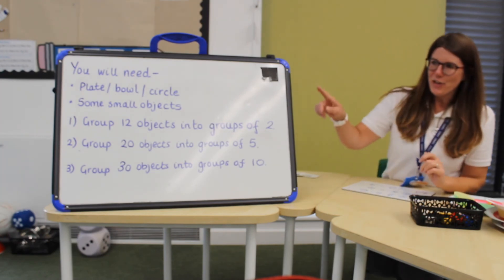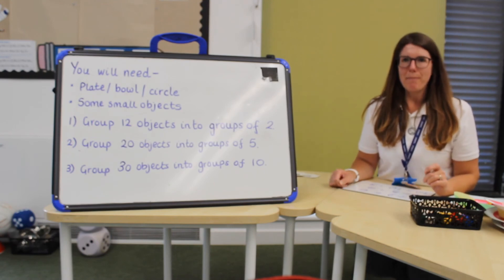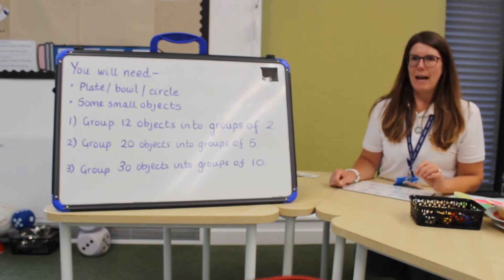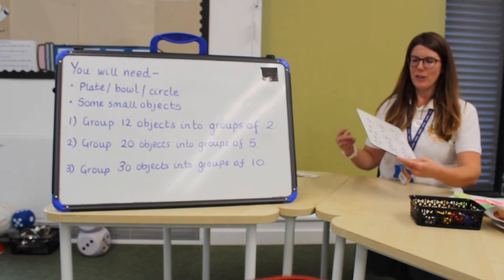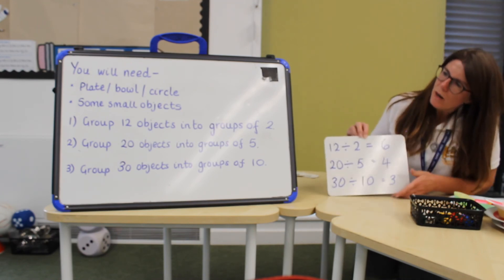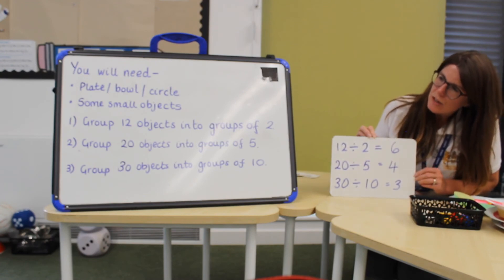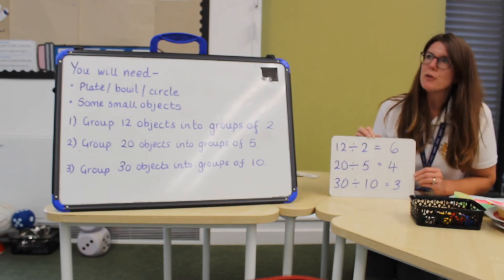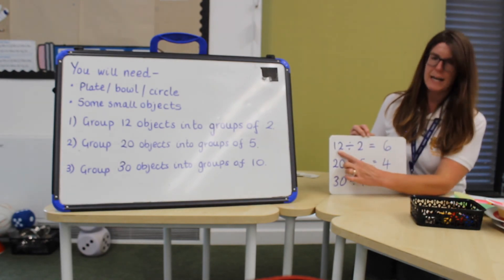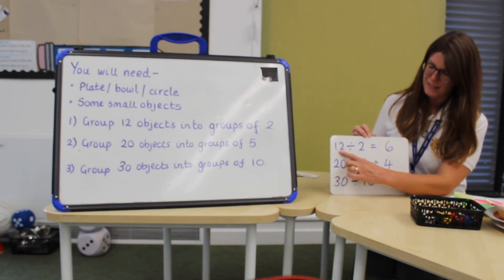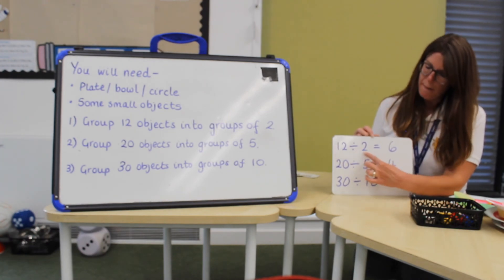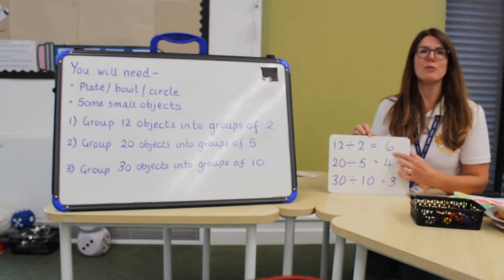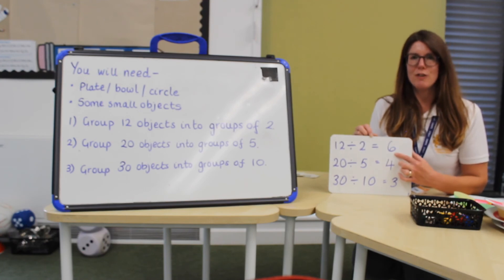Hello, hopefully you have used your objects to make groups as I have asked you in the questions on my board. Let's have a look at the answers. The first one was to find, use twelve objects and group them into groups of two. So you had twelve objects into groups or divided by two. How many groups did you make? You should have been able to make six groups.